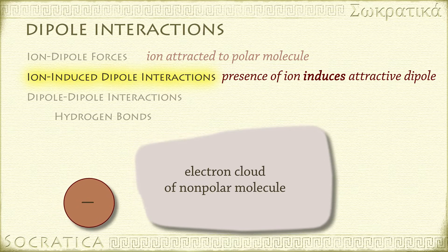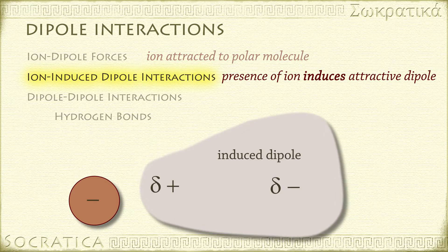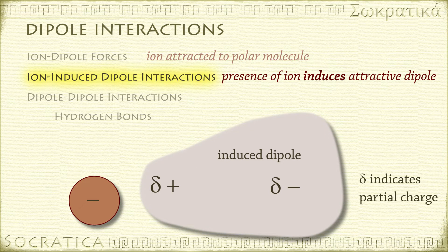Until an ion approaches. The charge of the ion causes a temporary distortion of the electron cloud of the nonpolar molecule, inducing a dipole, which is then attracted to the ion.